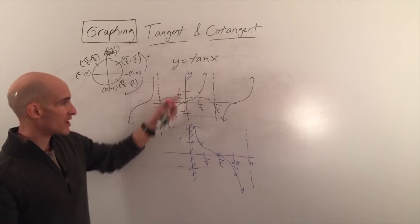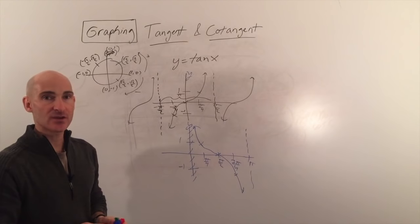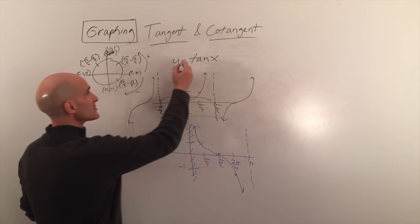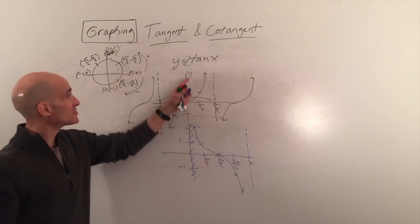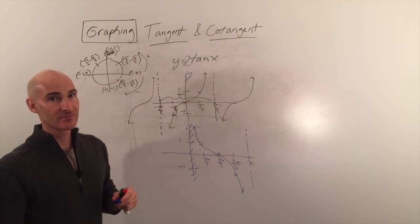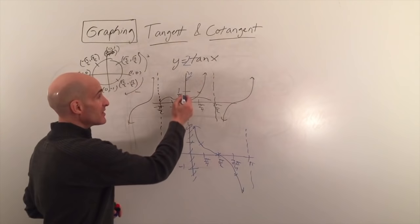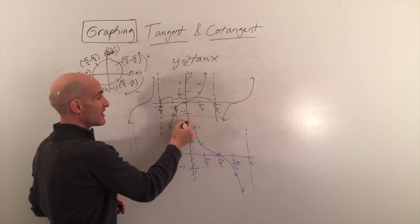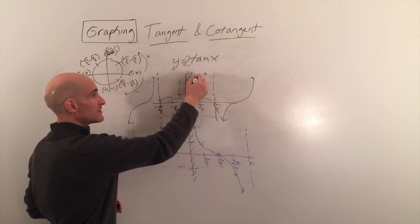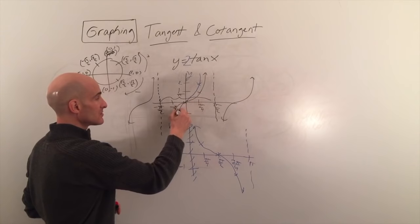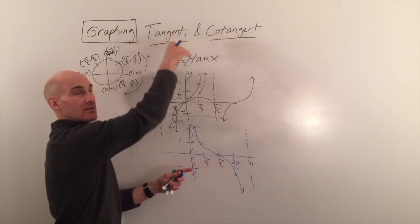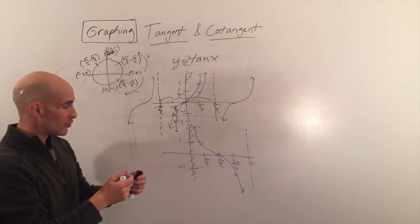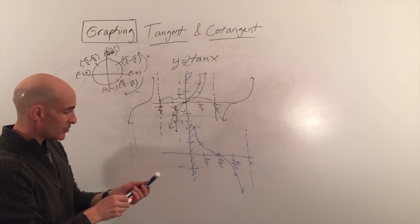Now let's look at stretching, compressing, and shifting — just like we did with sine and cosine. For y equals 2 tangent of x, the 2 stretches the graph vertically: instead of reaching 1, it reaches 2, and instead of negative 1, it reaches negative 2. This is a vertical stretch.